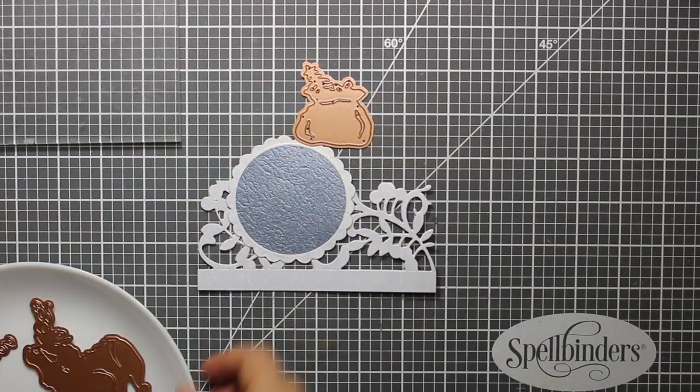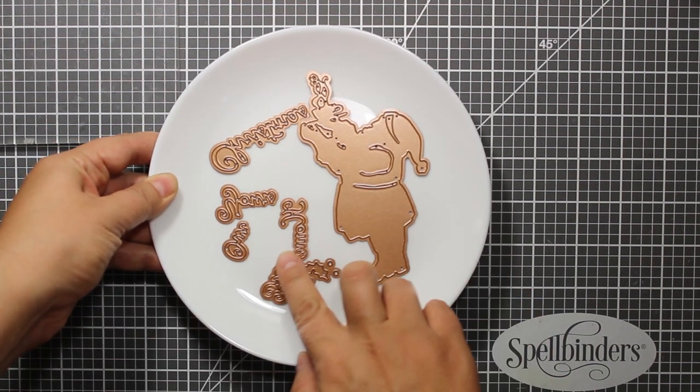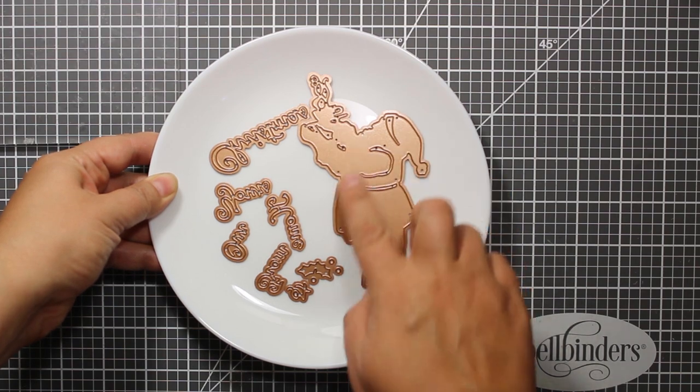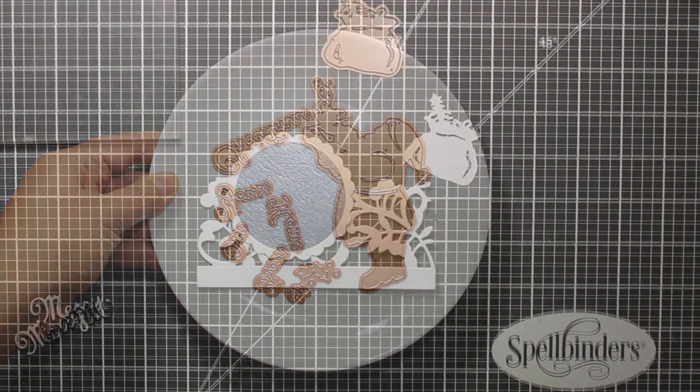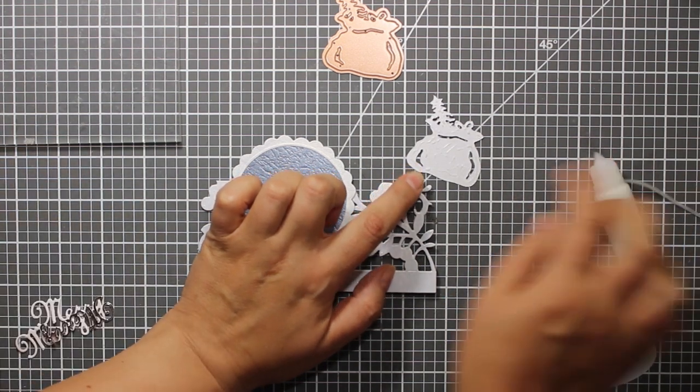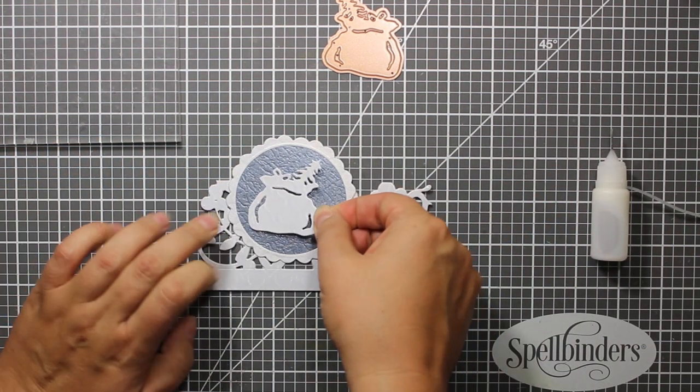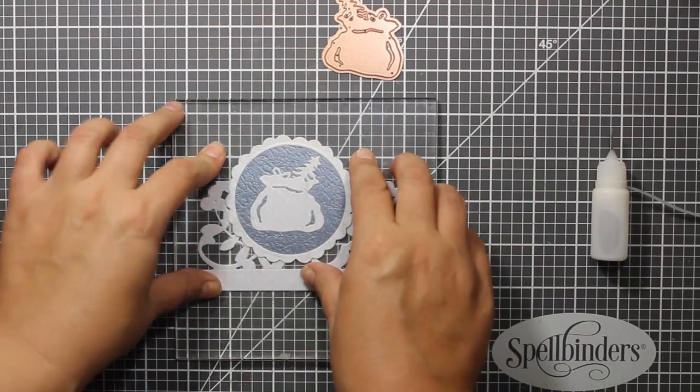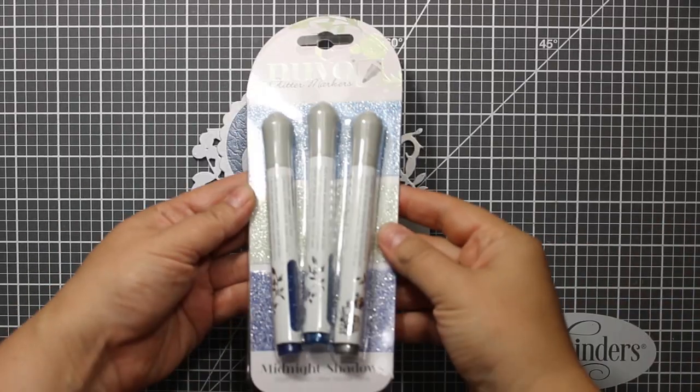This sack is from the set called From Our Home to Yours. It also includes this center holding a coffee cup plus a bunch of sentiments. For this project I'm going to use this sack with gifts because it fits perfectly inside the circle.